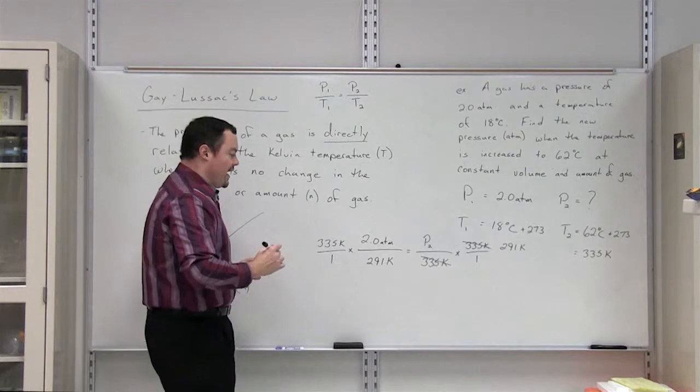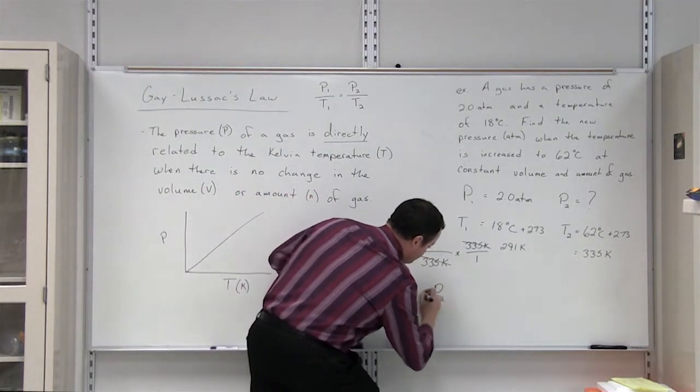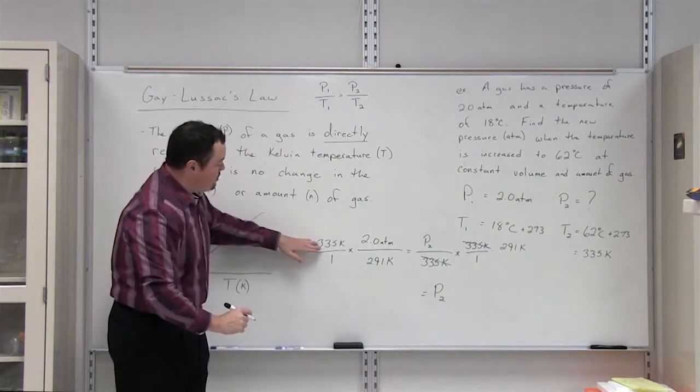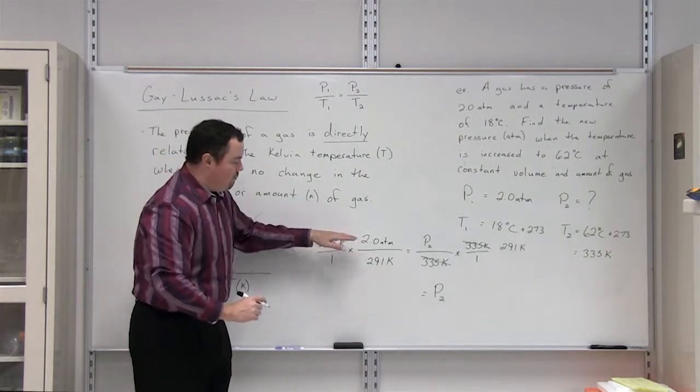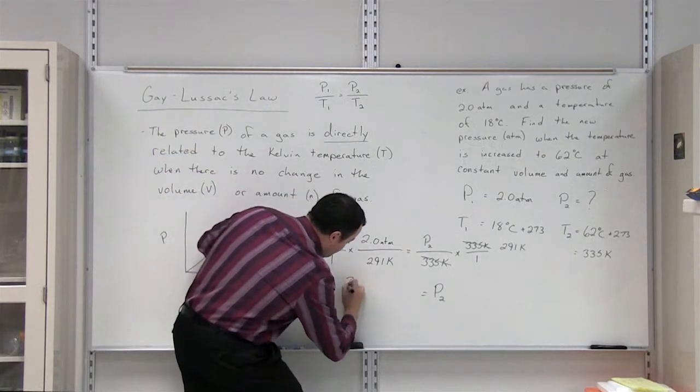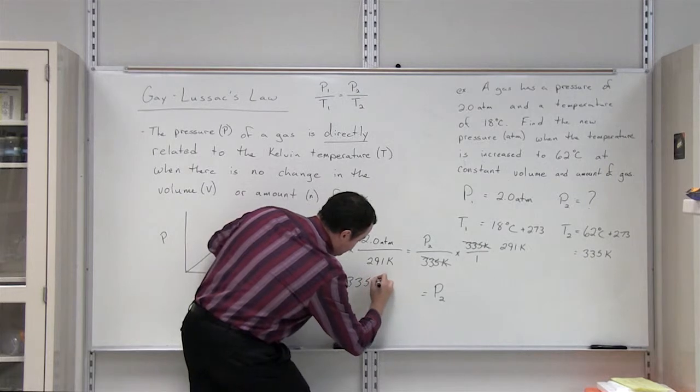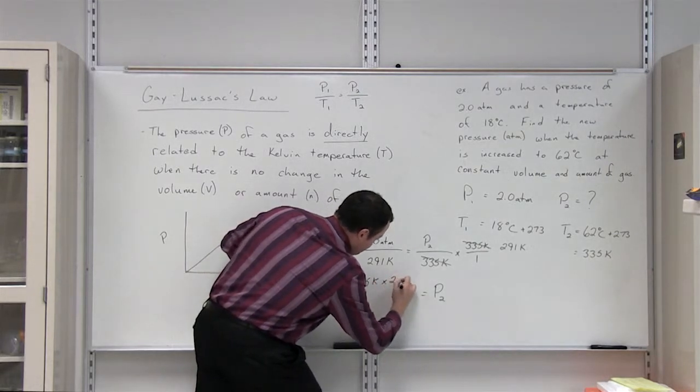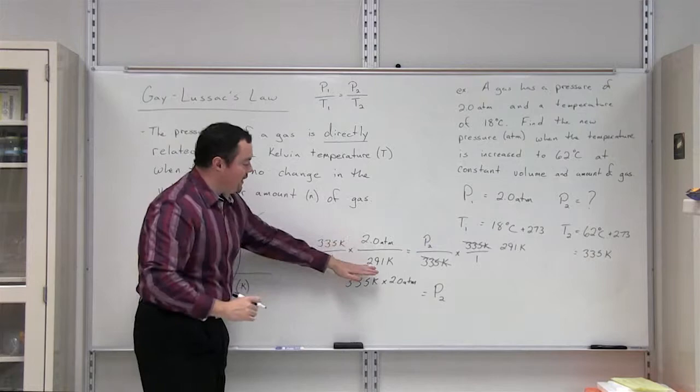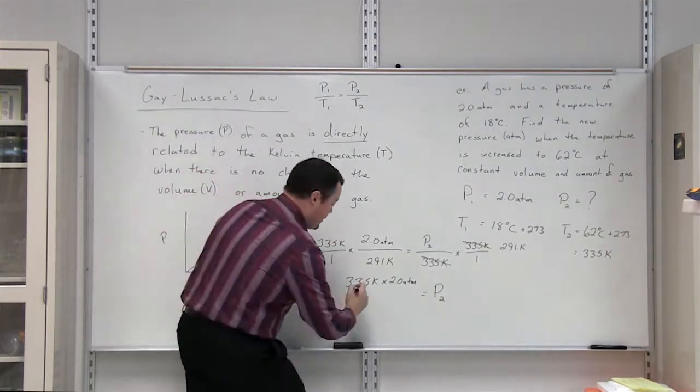So our formula now looks like P2 is going to be equal to 335 Kelvin multiplied by two atmospheres. And then we're going to divide that by 291 Kelvin.